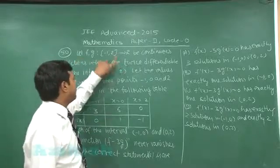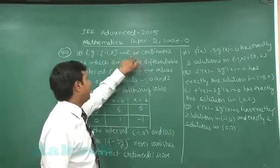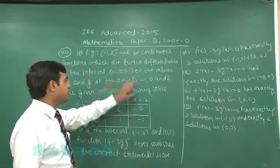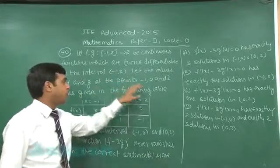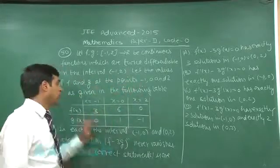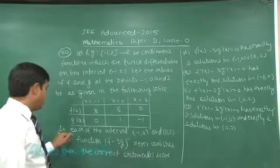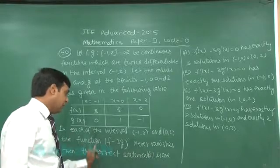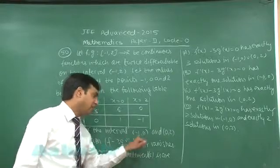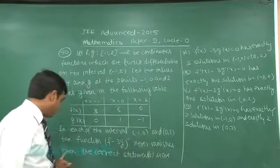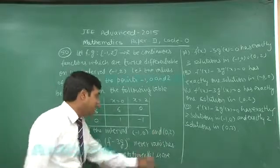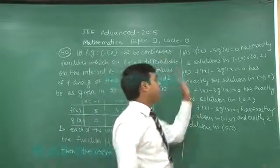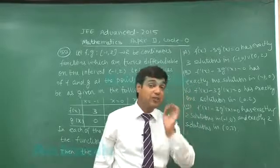Let us move to the next one that is question number 50. Let f and g from [-1,2] to R be continuous functions which are twice differentiable on the interval (-1,2). Let the values of f and g at the points -1, 0 and 2 be given in this table. In each of the interval [-1,0] and [0,2], the function (f minus 3g)'' never vanishes. Then the correct statement or statements is or are.